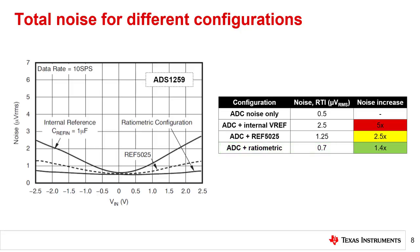This configuration allows you to use the entire full scale range of ADS-1259 without increasing total noise by a significant amount, resulting in the best overall system noise performance.